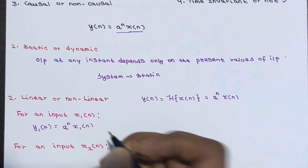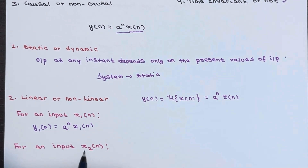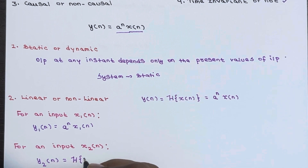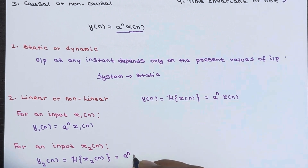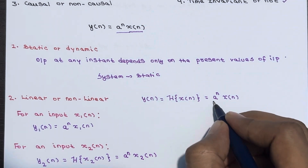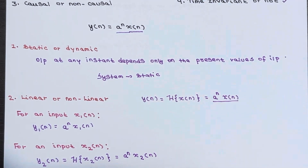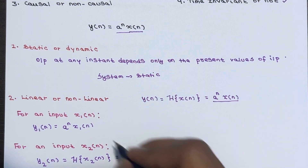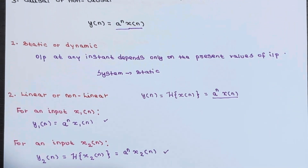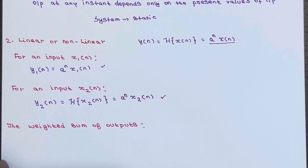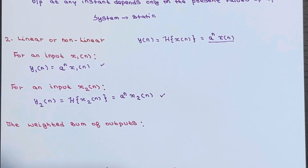Similarly, for an input x2(n), the output y2(n) = T[x2(n)] = a^n · x2(n). Now once we have calculated these two outputs, we have to calculate the weighted sum of outputs.